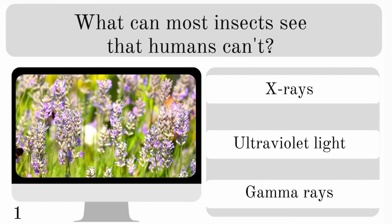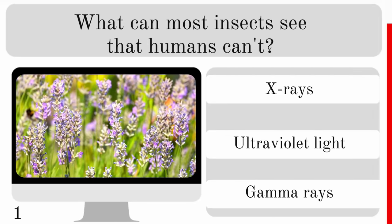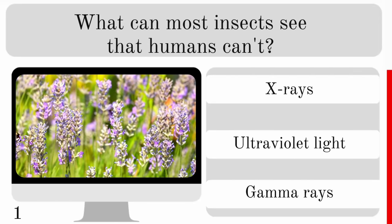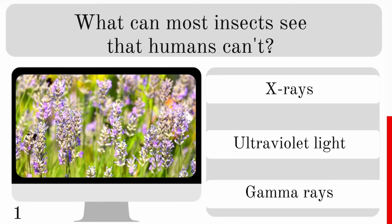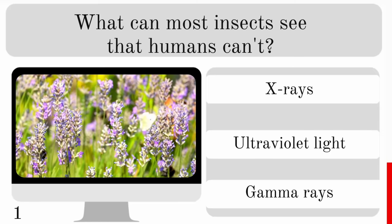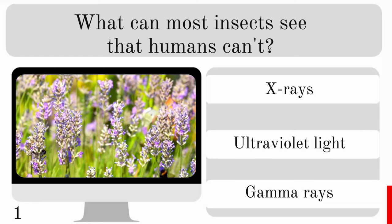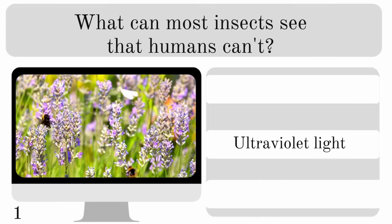What can most insects see that humans can't? X-rays, ultraviolet light or gamma rays? The correct answer is ultraviolet light.